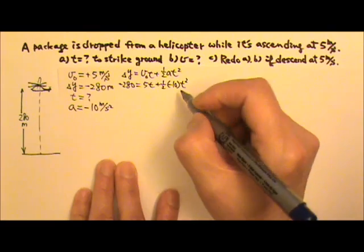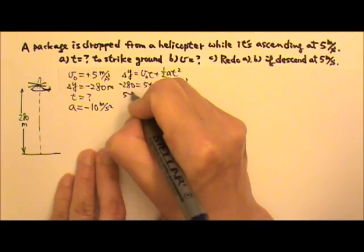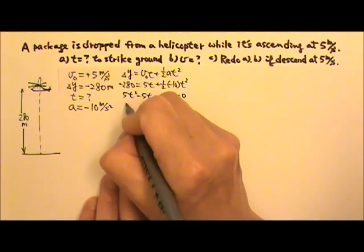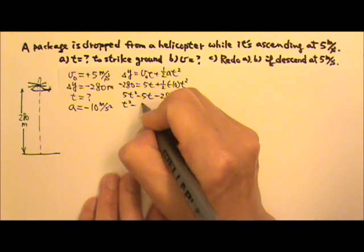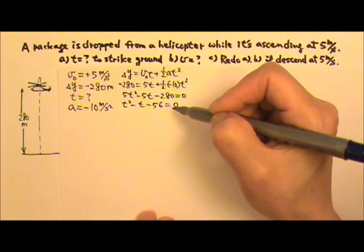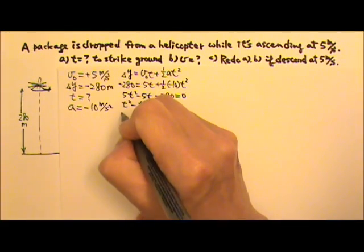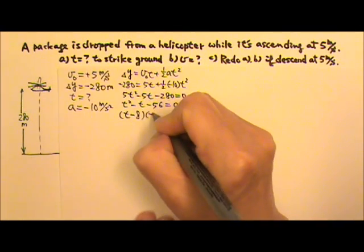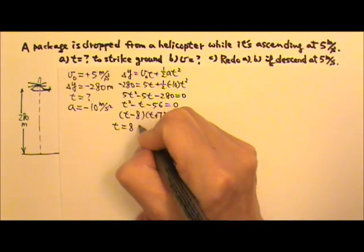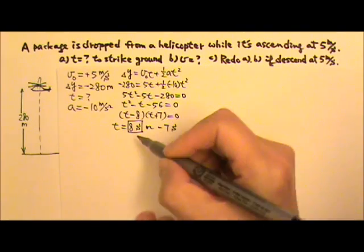We have a quadratic equation. Moving terms to the other side gives 5T squared minus 5T minus 280 equals 0, and dividing by 5 on both sides gives T squared minus T minus 56 equals 0. You can solve this using the quadratic formula, or fortunately for this one we can factor it: T minus 8 times T plus 7 equals 0, which means the time is either 8 seconds or negative 7 seconds.